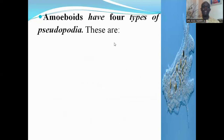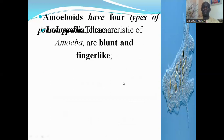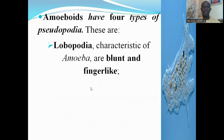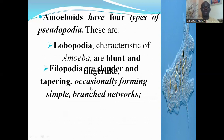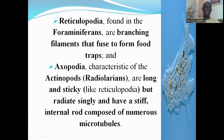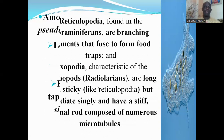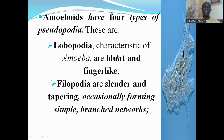There are four types of pseudopodia common to the amoeboid protozoans: lobopodia, filopodia, reticulopodia, and axopodia. The lobopodia are characteristic of the true amoeba and are usually blunt and finger-like in shape, as shown in the picture on the right-hand side.